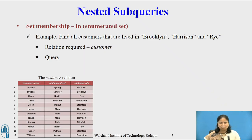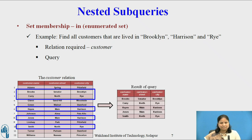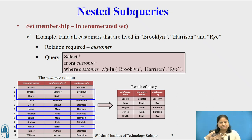Consider the example of set membership on an enumerated set: find all the customers that live in Brooklyn, Harrison, and Rye. The relation required is customer, which consists of customer name, customer street, and customer city. Tuples shown in the blue box indicate all the customers that live in Brooklyn, Harrison, and Rye. The query for this example is: SELECT * FROM customer WHERE customer_city IN ('Brooklyn', 'Harrison', 'Rye').